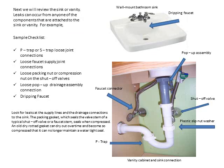Next, we'll review the sink and vanity. Leaks can occur from any one of the components attached to the sink or vanity. For example: P-trap or S-trap loose joint connections, loose faucet supply joint connections, loose packing nut or compression nut on the supply valves, loose pop-up drainage assembly connection, and dripping faucet. Look for leaks at the supply lines and the drainage connections to the sink. The packing gasket seals the valve stems of a typical shut-off valve or faucet stem, and an old dry-rotted gasket can no longer maintain a watertight seal.